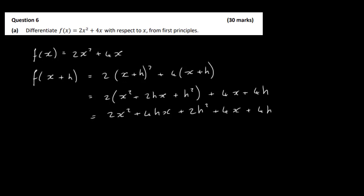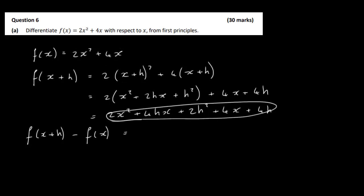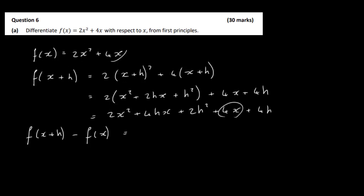The next thing we need to do is take f of x plus h and subtract f of x. You can see that we have a 2x squared in each, and a 4x in each, so they give us 0 when we subtract. So 2x squared minus 2x squared is 0, and 4x minus 4x is 0. We just end up with 4hx plus 2h squared plus 4h.